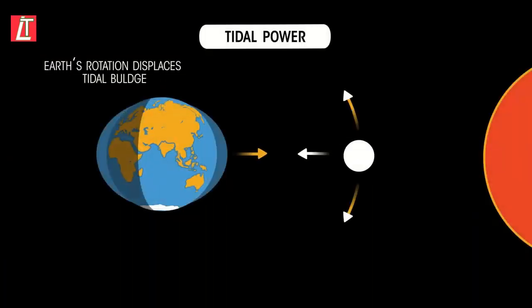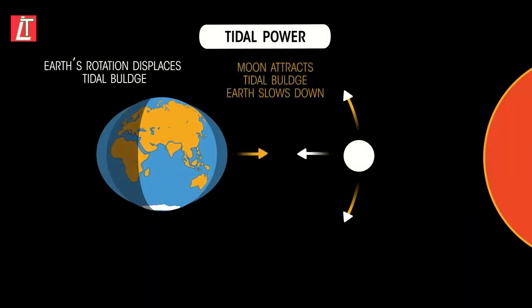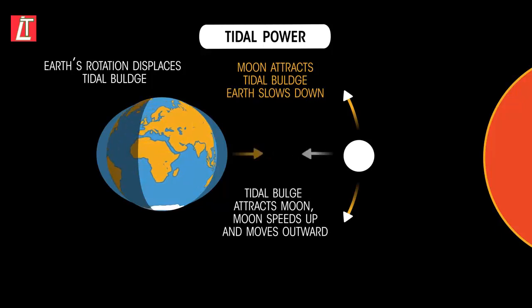The tides are caused by the gravitational attraction of the moon, and also the sun, on our oceans as the earth rotates. The energy comes from the kinetic energy of the earth rotating, which is very gradually slowing down.